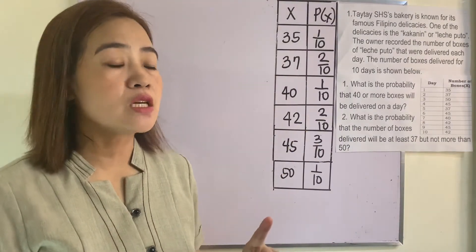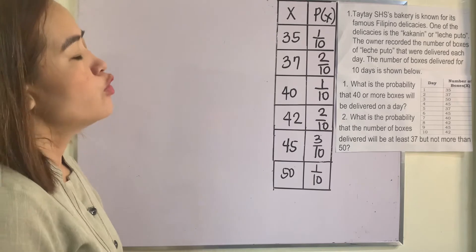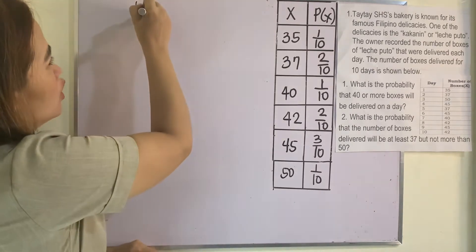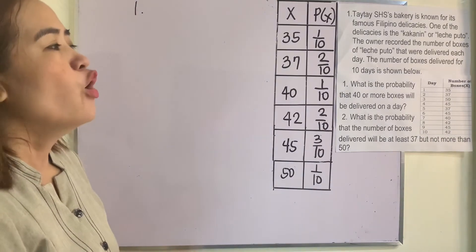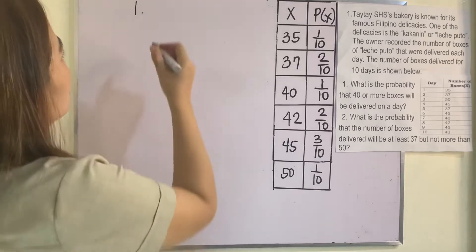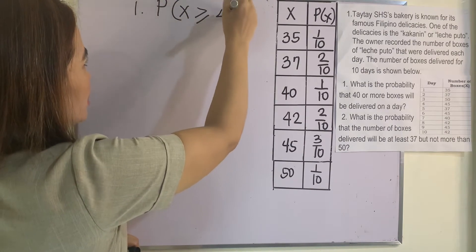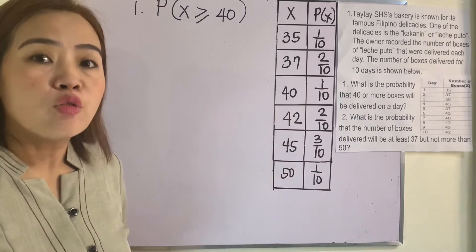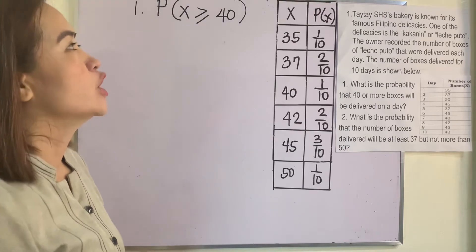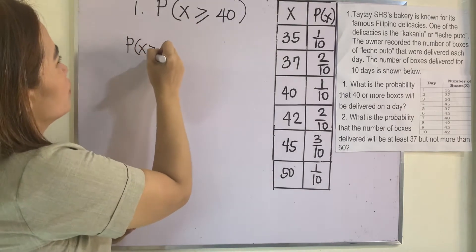Now let us compute the probabilities. Question 1: what is the probability that 40 or more boxes will be delivered on a day? The phrase '40 or more' means 40 is included, so this is represented as P(X ≥ 40). Now, how are we going to get this probability?